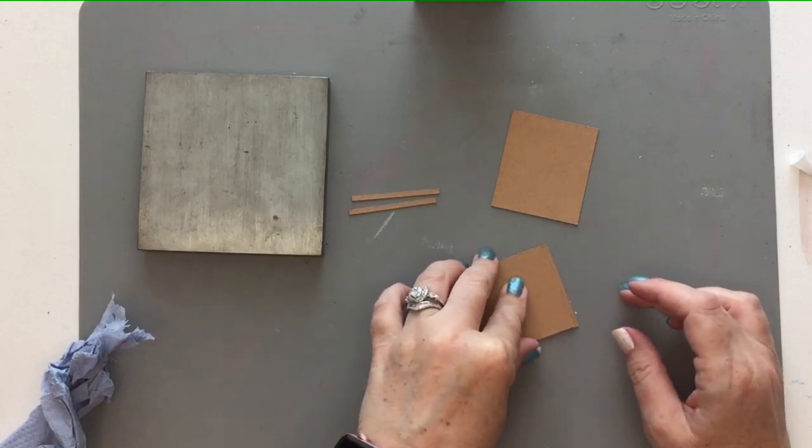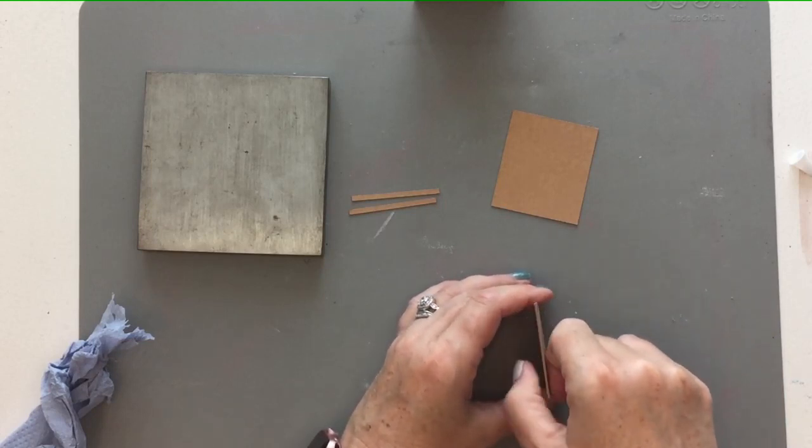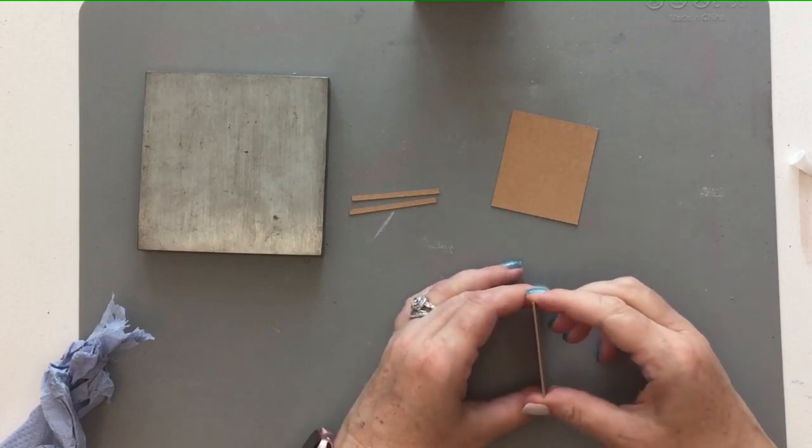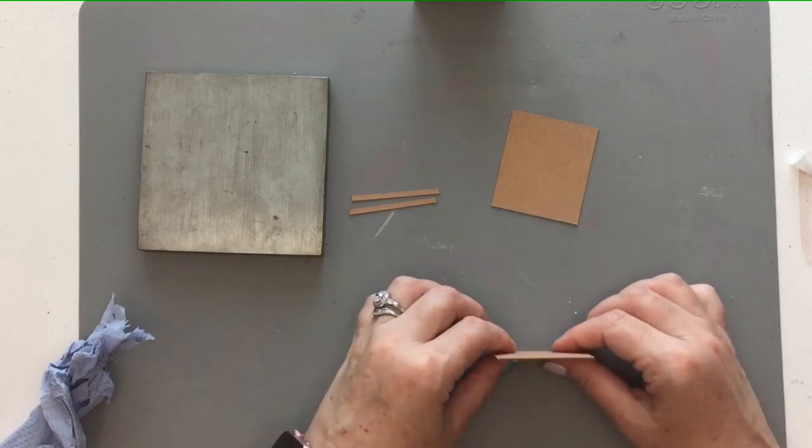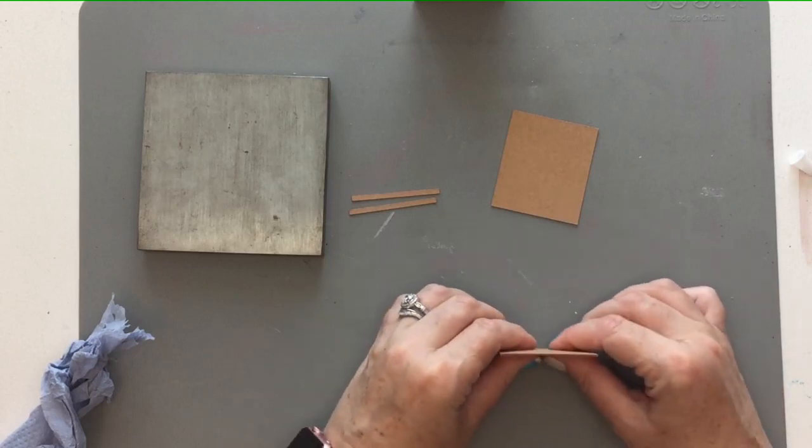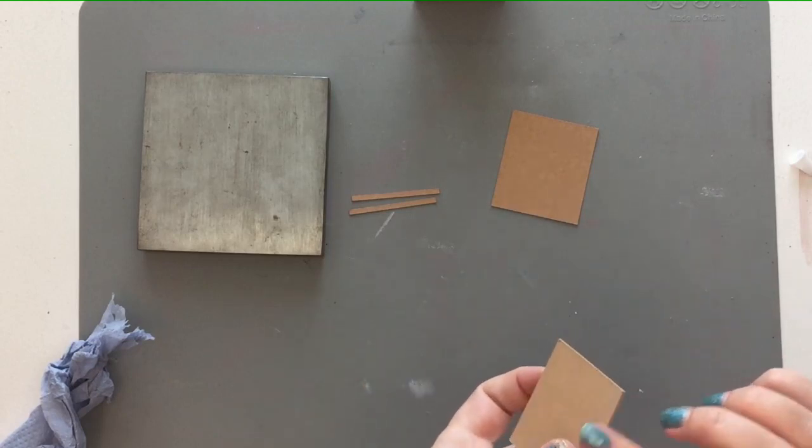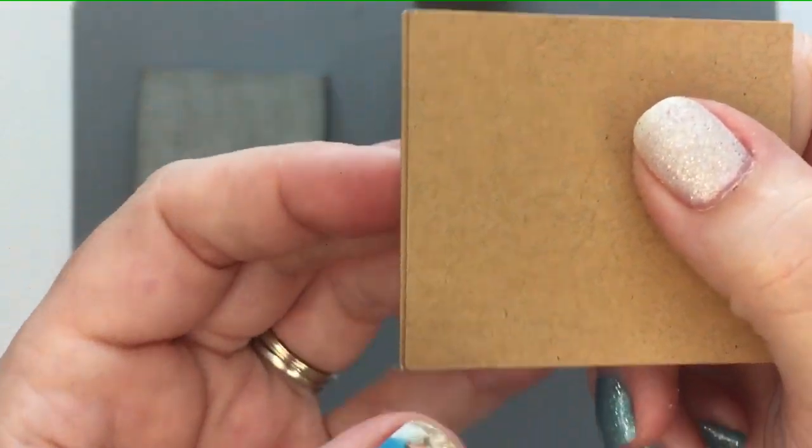We want to work fairly quickly here so that all the pieces still move and they don't set before we're ready for them. So line up the sides and the bottom, keep it flat on one side and then you've got the gradient at the top.